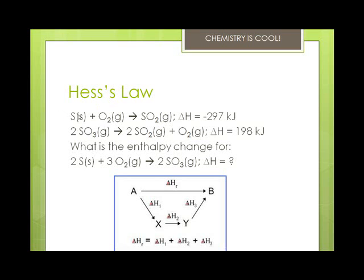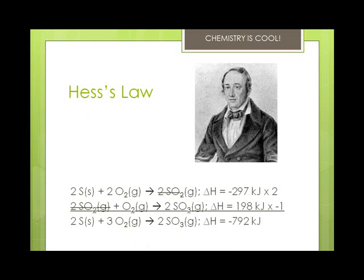You've got 2S plus 2O2 giving 2SO2, which cancels with the 2SO2 at the beginning, plus another O2 at the bottom giving 2SO3. That gives you a total reaction of 2S plus 3O2 giving 2SO3. Since we multiplied the first one by 2, it's negative 297 times 2, plus 198 times negative 1 because we reversed the second reaction — and any time you reverse a reaction, you multiply its delta H by negative 1. That gives us a delta H of negative 792 kilojoules.